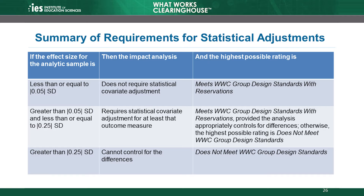Effect sizes greater than 0.05 standard deviations and less than or equal to 0.25 standard deviations require statistical covariate adjustment. If the study uses a statistical adjustment, then it can meet WWC group design standards with reservations. Finally, if baseline differences are greater than 0.25 standard deviations, they cannot meet WWC group design standards with reservations, even if they adjust for the covariate.